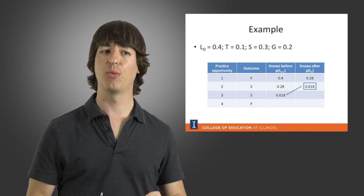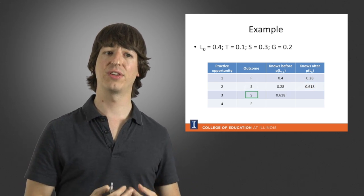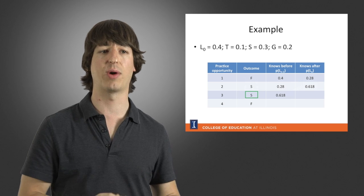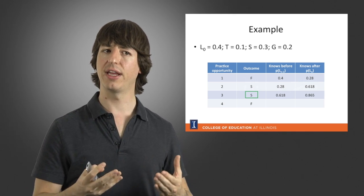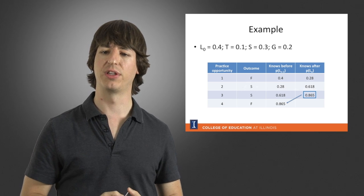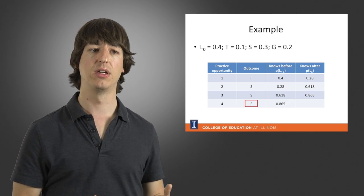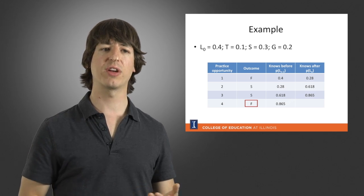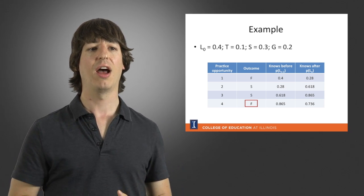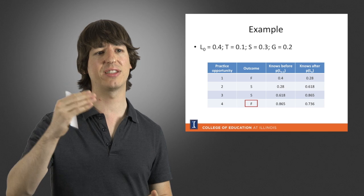For the third practice opportunity, we start at 62% and observe the student successfully applies the skill again. Since they succeeded twice in a row, it's less likely they're just guessing, so we update to about 86.5% chance they know the skill. For the fourth practice opportunity, we start at 86.5% and observe that the student failed. We adjust downward to about 73%, because even though they failed, there's still a 30% chance they slipped. So the probability decreases, but not by too much.